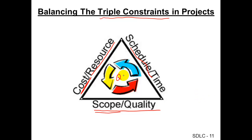Some people put quality in the middle, referring to it as independent from the scope, but some people put it together. These three constraints depend on each other. For instance, if you want to speed up your project and make it shorter — your boss says, instead of end of August, I want this done by end of July — what can you do in order to speed it up?